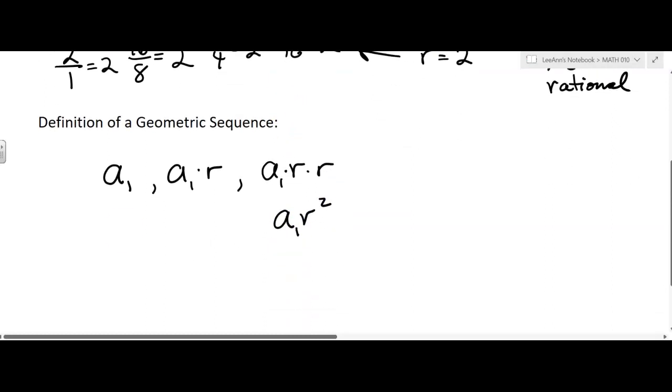Let me make a better sequence here. A sub 1, comma, A sub 1 times R, A sub 1 times R squared. What do you think the next one's going to be? A sub 1 times R cubed, and so on and so forth. Again, you have to have a starting point. You don't have to start at 1 like I did on mine, but you can start someplace else. That's the definition of a geometric sequence.